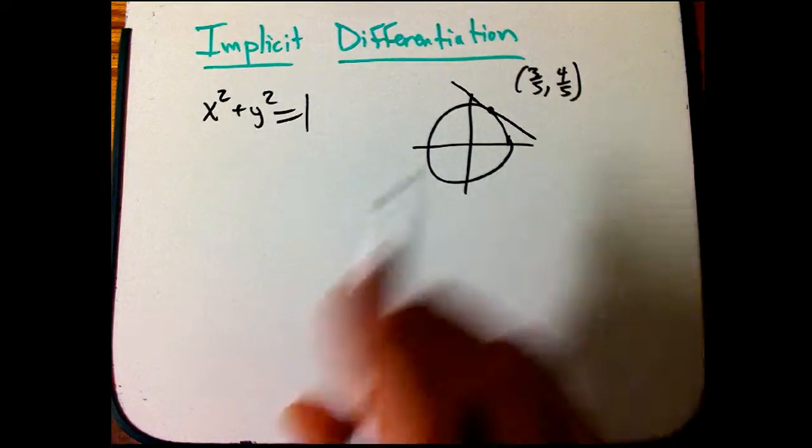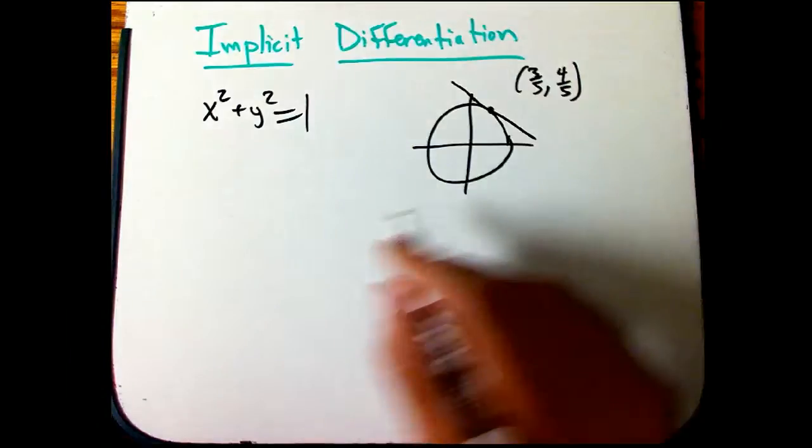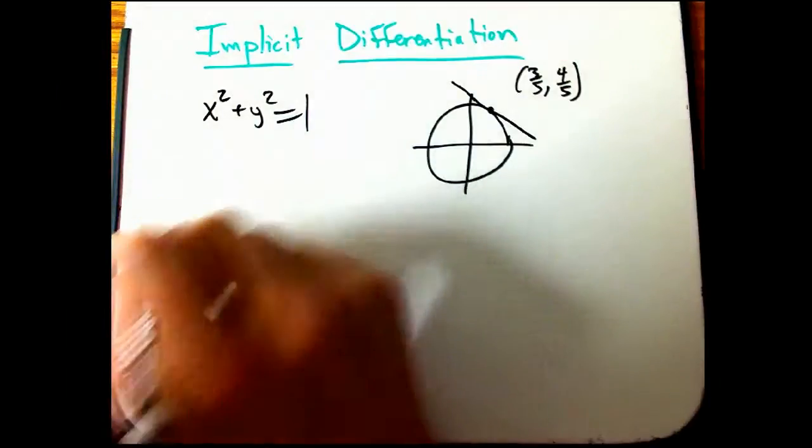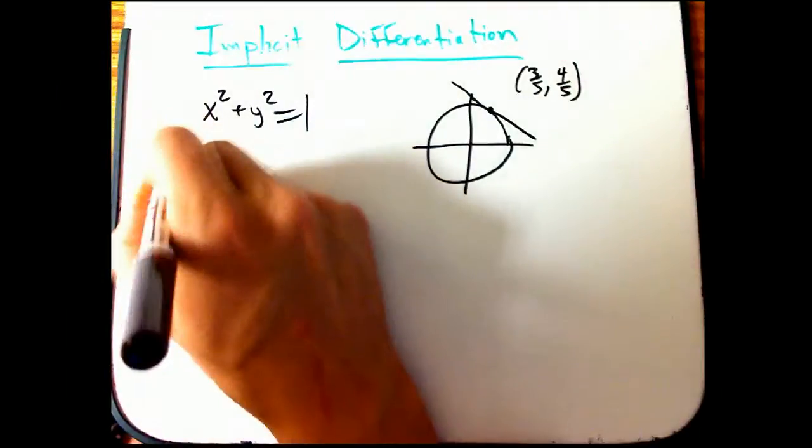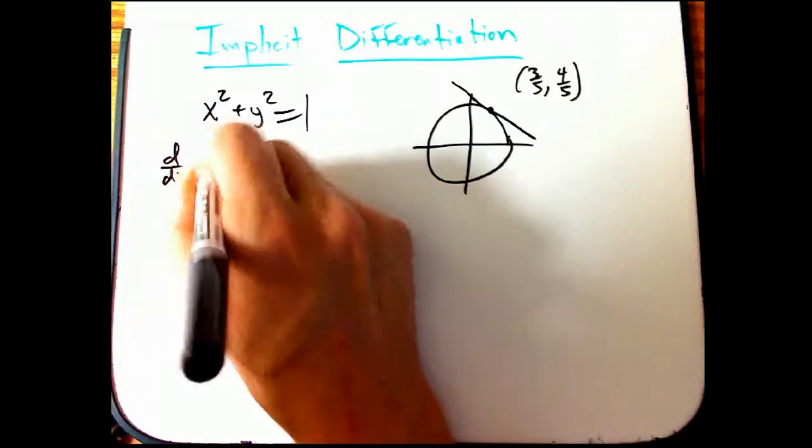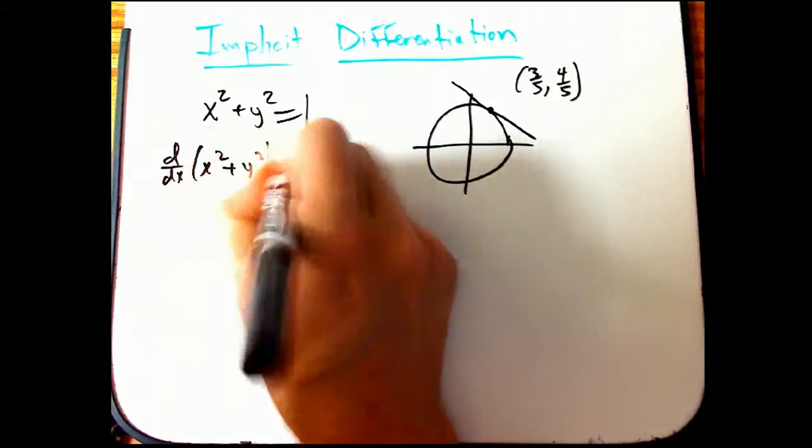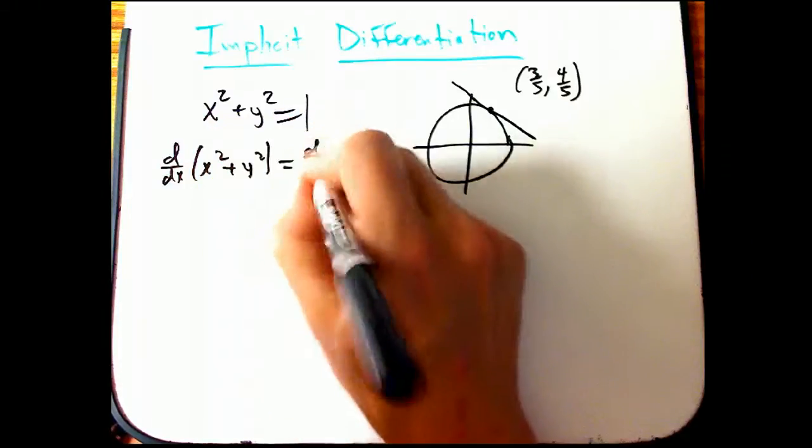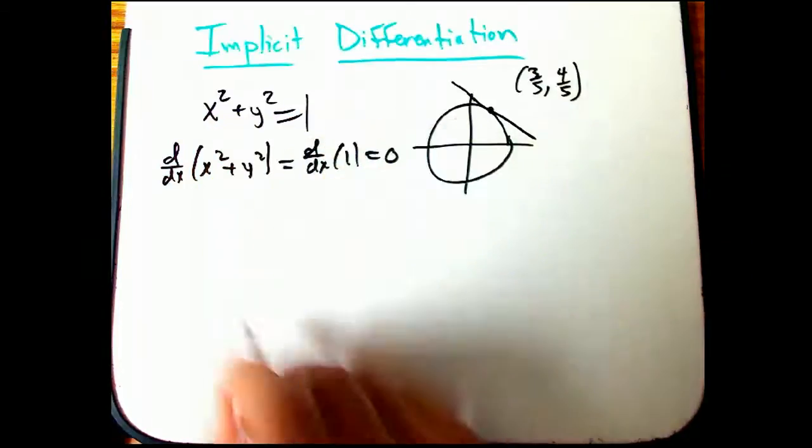So let's go really quick through how you would see it in BC. We'd take the derivative of both sides with respect to x. d by dx of one. Well, that's going to be zero. It's a constant.